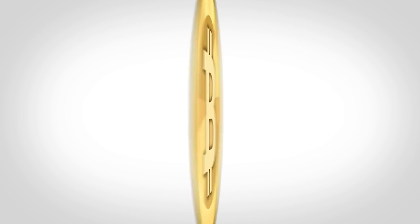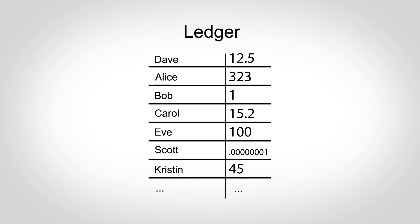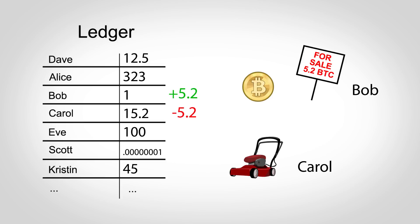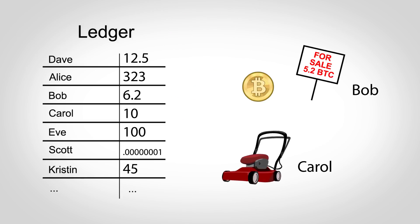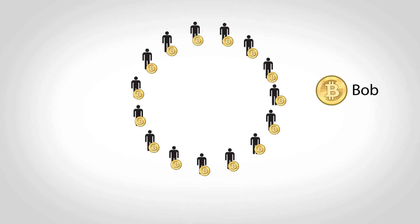At a very basic level, Bitcoin is just a digital file or ledger that contains names and balances, and people exchange money by changing this file. When Bob sells Carol a lawnmower for 5.2 Bitcoins, Bob's balance goes up by 5.2 and Carol's down by 5.2. There's no gold or government-issued money backing these numbers. Bob is only willing to trade his real-life lawnmower for a higher number in this digital file because he has faith that other people will also trust the system.